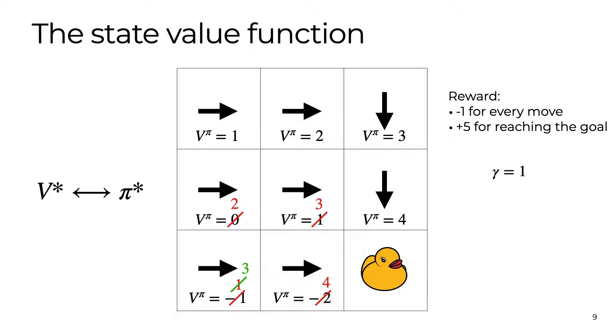Once we have updated the policy, we can recalculate a new value function corresponding to our new policy. We iterate this process until convergence when we have achieved the optimal policy and the optimal value function.